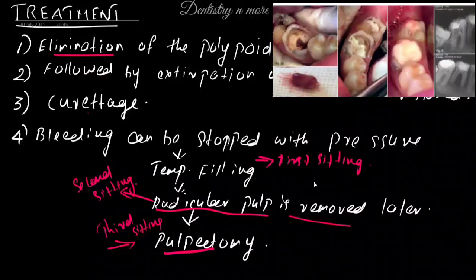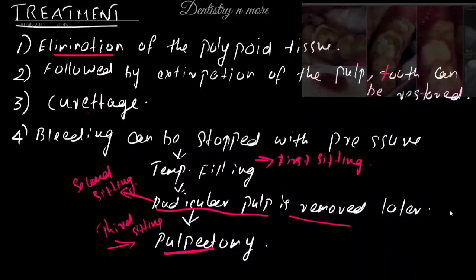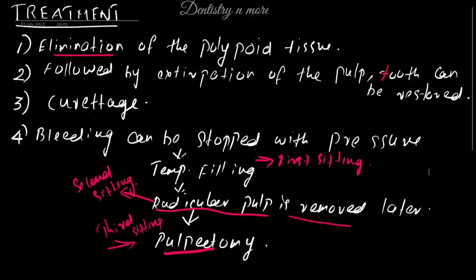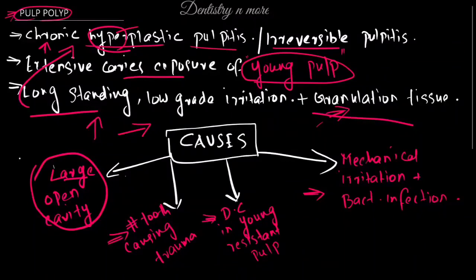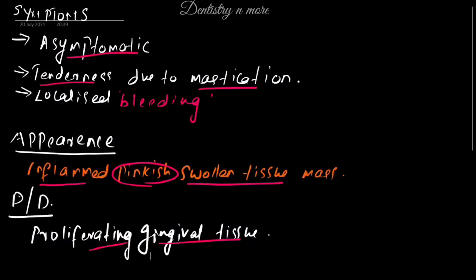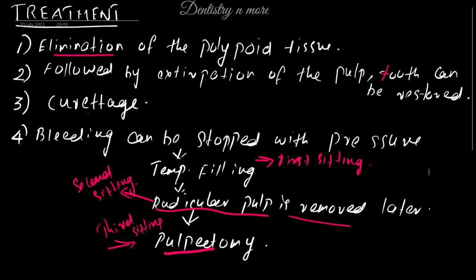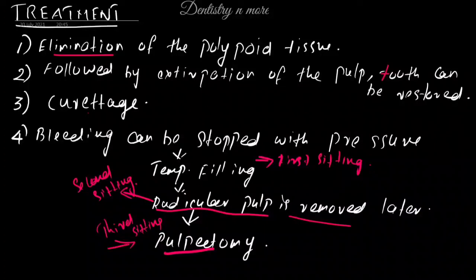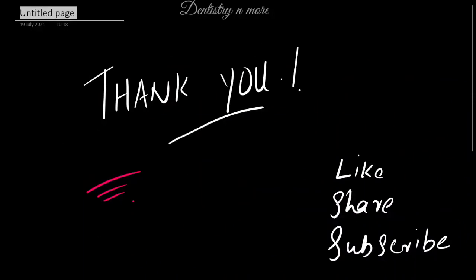That's how we manage pulp polyp. It is a very small topic from oral pathology and is very commonly asked as a short note in university exams. You can write about its introduction, causes, symptoms, appearance, differential diagnosis, and treatment across the first, second, and third sittings. You can also differentiate between pulp polyp and gingival polyp. I'll come up with a new topic in dentistry and more — thank you.